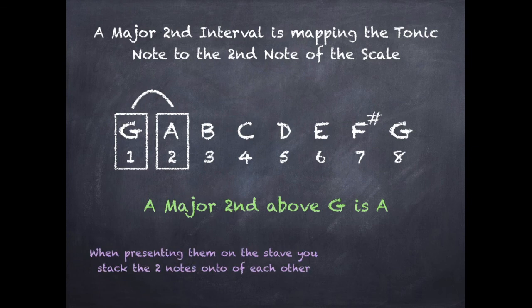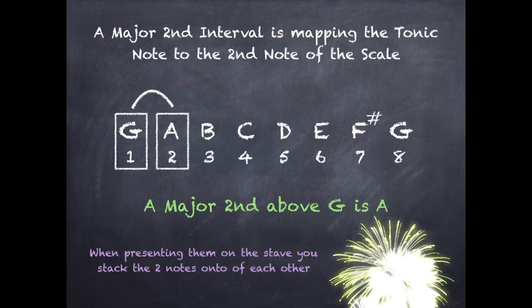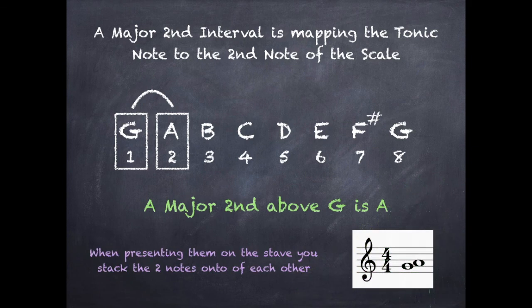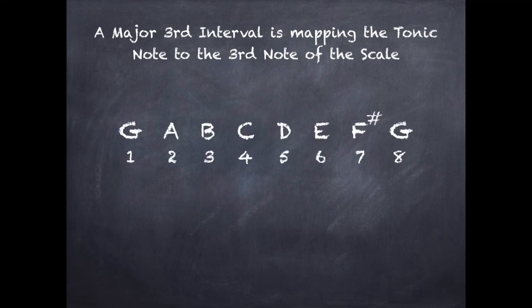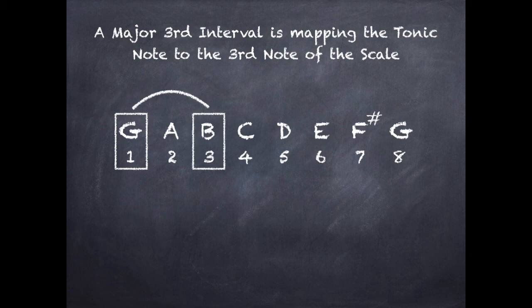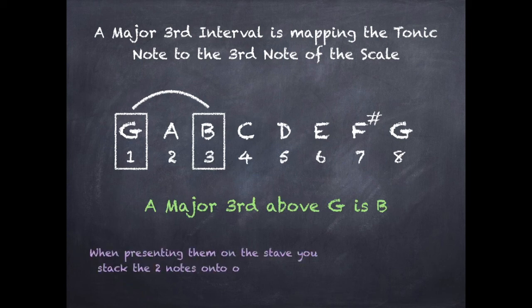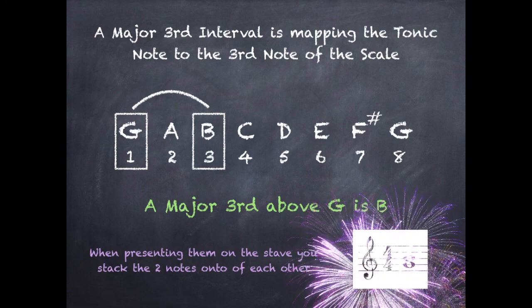When presenting intervals on the stave, you stack the two notes on top of each other. A major third interval maps the tonic note to the third note of the scale. So with a G major scale, I go from the first note, G, to the third note, B. A major third above G is B, and when presenting them on the stave you stack the notes on top of each other.